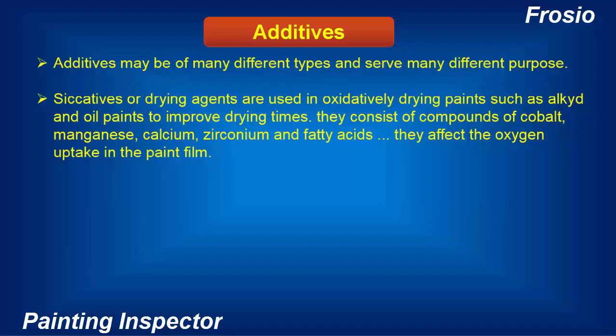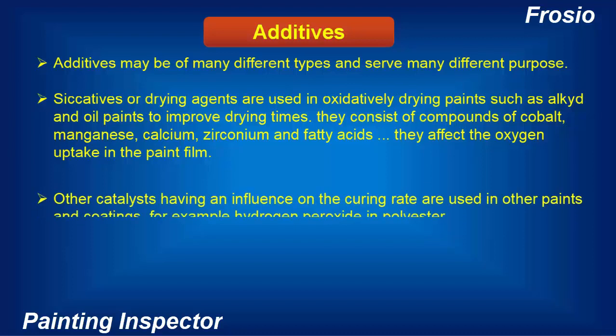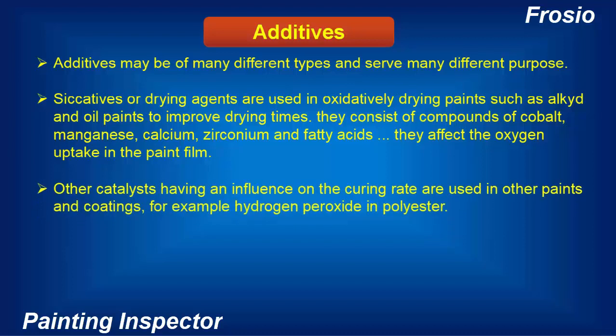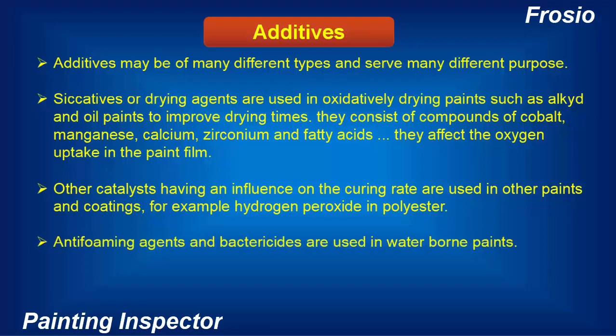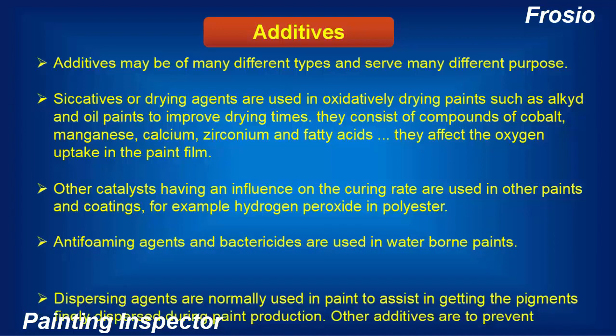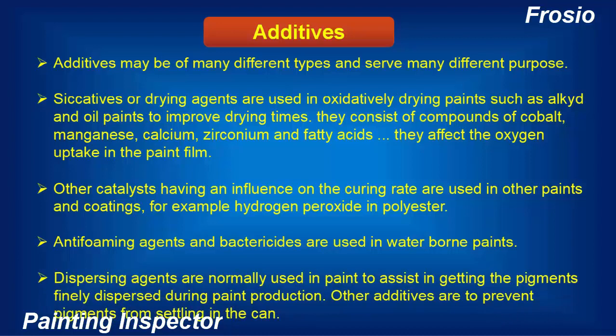They affect the oxygen uptake in the paint film. Other catalysts having an influence on the curing rate are used in other paints and coatings — for example, hydrogen peroxide in polyester. Anti-foaming agents and bactericides are used in waterborne paints. Dispersing agents are normally used in paint to assist in getting the pigments finely dispersed during paint production. Other additives are used to prevent pigments from settling in the can.